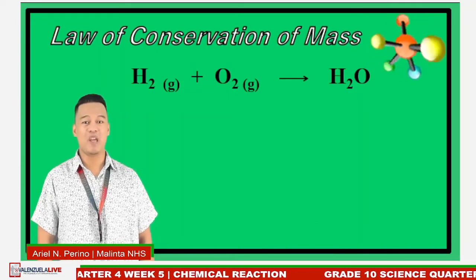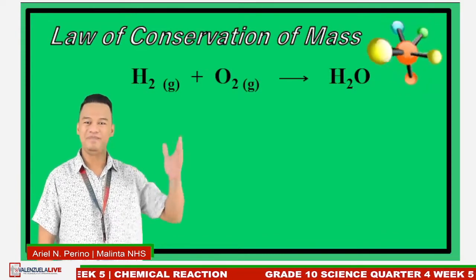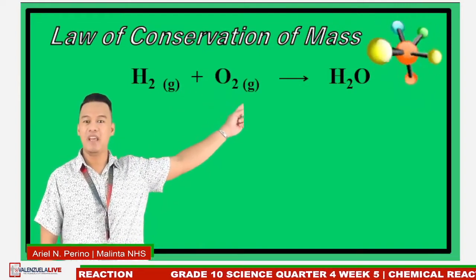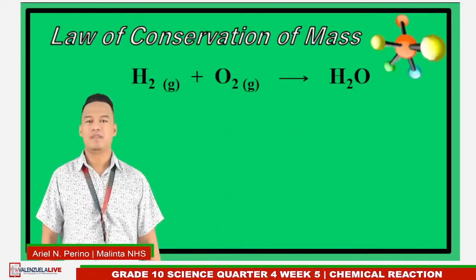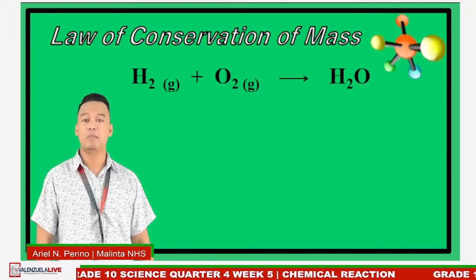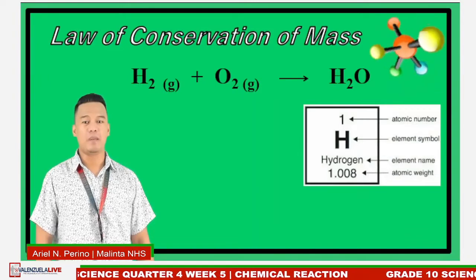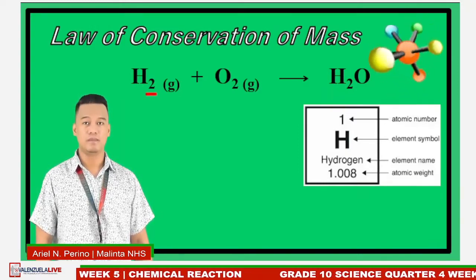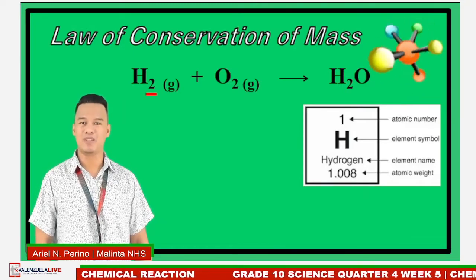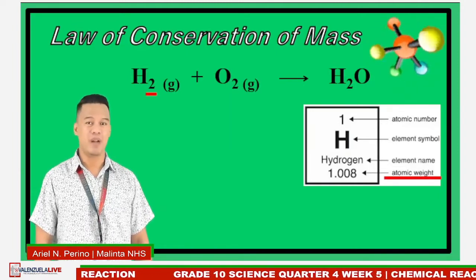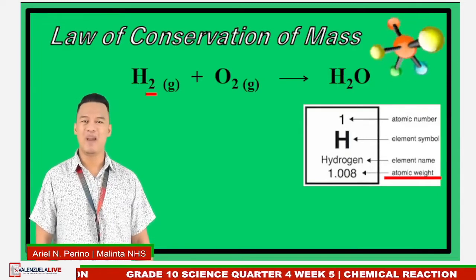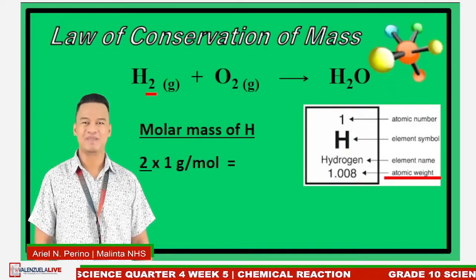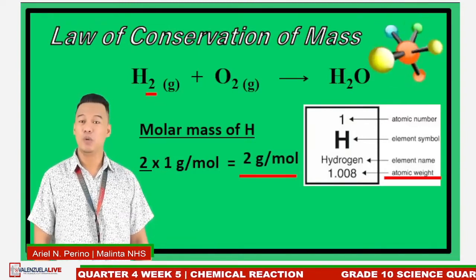Let's check if this chemical reaction follows the law of conservation of mass by getting the molar mass of hydrogen, oxygen, and water molecules. To get the molar mass, multiply the atomic mass by the coefficient. The atomic masses are found in the periodic table. The coefficient of hydrogen is 2, and the atomic weight of a hydrogen atom is 1 gram per mole. So, 2 times 1 equals 2 grams per mole.